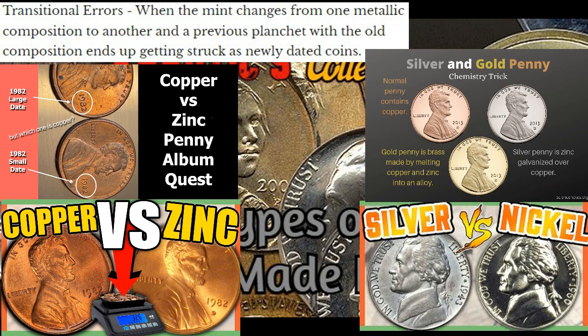Transitional errors: when the mint changes from one metallic composition to another, a previous planchet with the old composition ends up getting struck as a newly dated coin. When they start making coins out of a new metal composition, if they have any leftover from the previous material, they'll just use it. Because of that, during certain transitional period years there will be some coins from the same year made out of silver, nickel, or copper versus zinc.